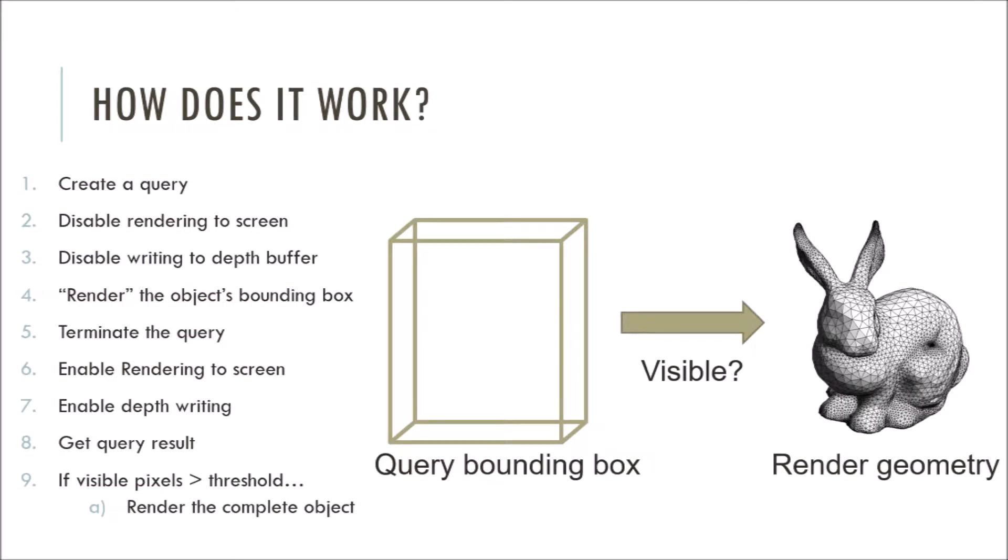An occlusion query is fundamentally simple. First, you need to initiate an occlusion query. Next, you need to turn off writing to the frame buffer and depth buffer. This allows the GPU to rasterize at a much higher speed. Next, you need to render a simple approximation of the complex object, usually a bounding box, which will be used for depth testing. Pixels that pass depth testing will not be rendered on the screen because rendering and depth writing were disabled. Then we terminate the occlusion query, which resets the counter of visible pixels.